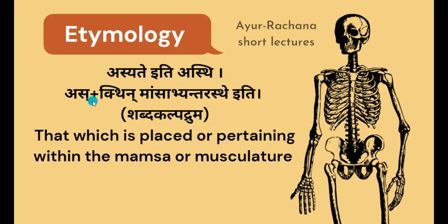These two lines explain the etymology of the term asti, meaning that asti is that which is placed or pertaining within the mamsa. Mamsa abhyandaraste iti — the bones are covered by the muscles, as we all know.